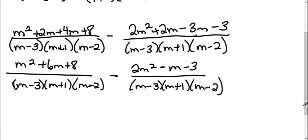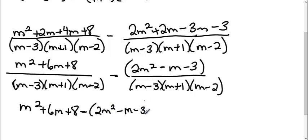Okay, so now I'm going to combine them into one fraction. I'm going to make sure I put parentheses around this one. Therefore, when I put it together, I get M squared plus 6M plus 8 minus parentheses 2M squared minus M minus 3 all over my common denominator.